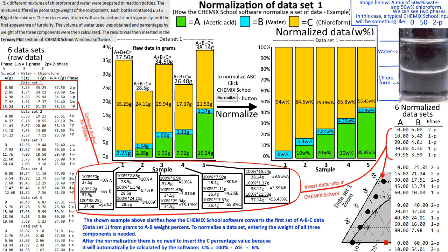The shown example clarifies how the Chemex School software converts the first set of ABC data from grams to AB weight percent. To normalize a data set, entering the weight of all three components is needed. After the normalization there is no need to insert the C percentage value because it will automatically be calculated by the software.